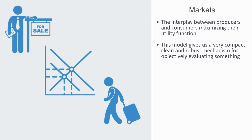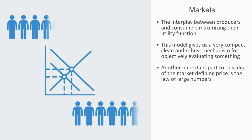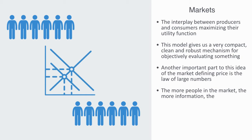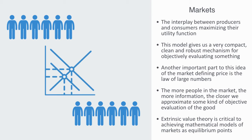Another important part of this idea of the market as defining price and value is the law of large numbers. It is assumed that the more people we have in this market, the more information we're bringing into the equation, and thus the greater the interplay between all these different subjective utility functions that will end up approximating some kind of real evaluation of the good. This is a central idea in the efficient markets hypothesis. This whole framework of extrinsic value theory is critical to achieving abstract mathematical models of markets as equilibrium points, which is central to the whole enterprise of standard economics.